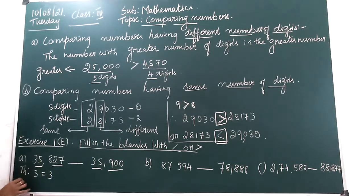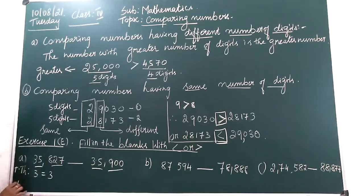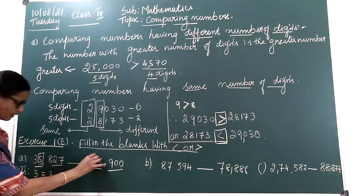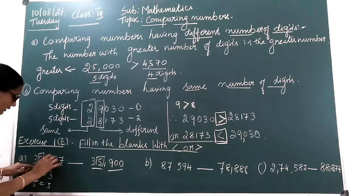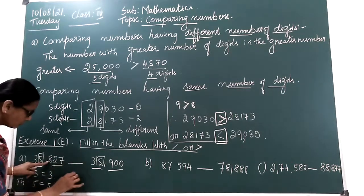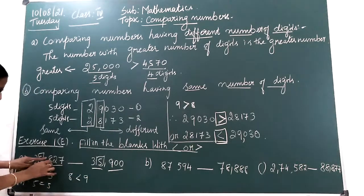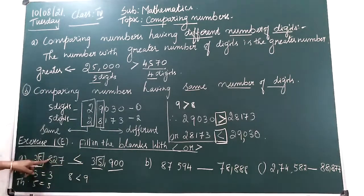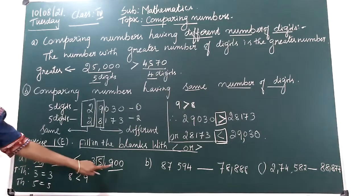Is the 10,000 place equal? Both numbers are equal. Thousands place also? Both numbers are equal — both have 5. Compare the next digits: here 8, and here 9. So 8 is less than 9. Therefore, 35,827 is less than 35,900.